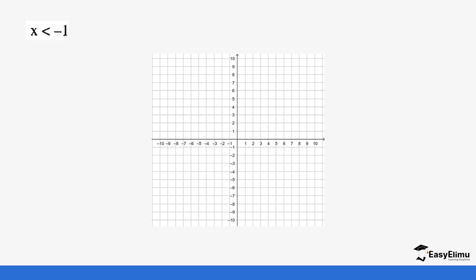Now we have x < -1. We go to where negative 1 is on the x-axis. Since there is no equal sign, we use a dotted line because negative 1 is not part of the values of x. We take all values of x that are less than negative 1, meaning all values greater than negative 1 are unwanted. We shade that region, and that forms our inequality.